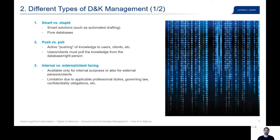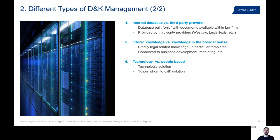Another important distinction is between internal document and knowledge management and external or client-facing document management. From a law firm perspective, these types bring very different requirements, particularly in relation to professional duties, governing law, confidentiality obligations, and so on. Additional types include homemade databases — internal databases fed with the firm's own documents — or databases from third-party providers such as Westlaw and LexisNexis, among many others.